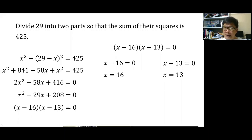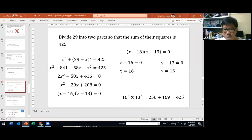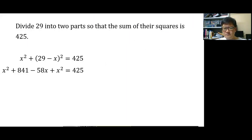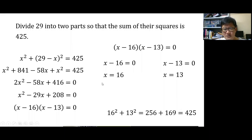Check: 16 plus 13 equals 29 — the two parts add to 29. And 16 squared plus 13 squared equals 256 plus 169 equals 425 — the sum of squares is correct. The two parts are 16 and 13.